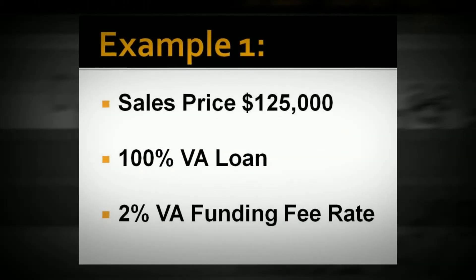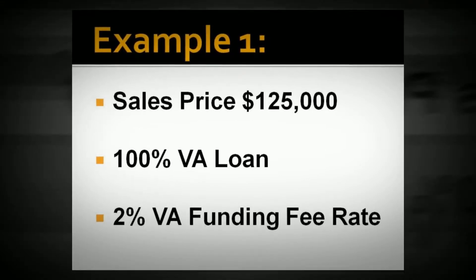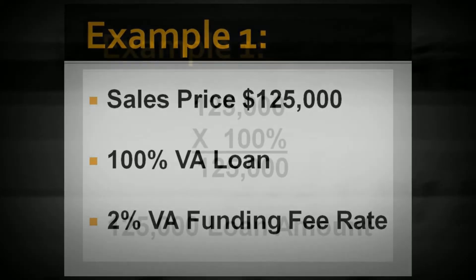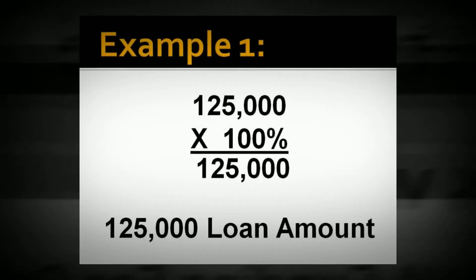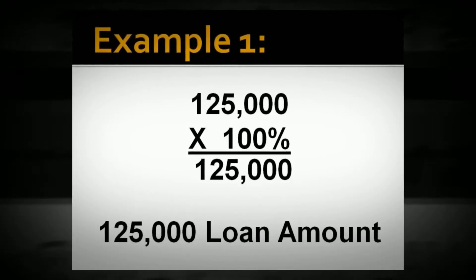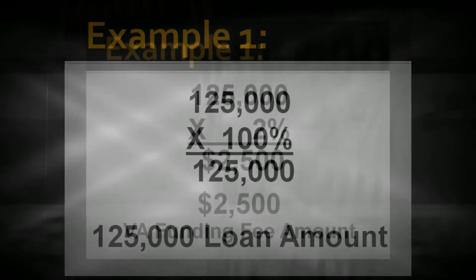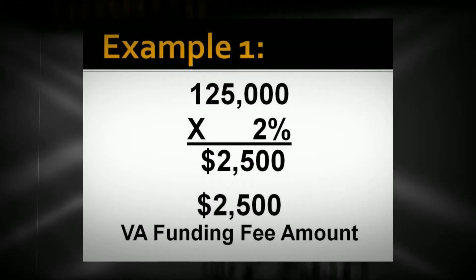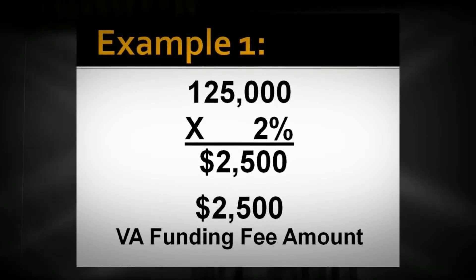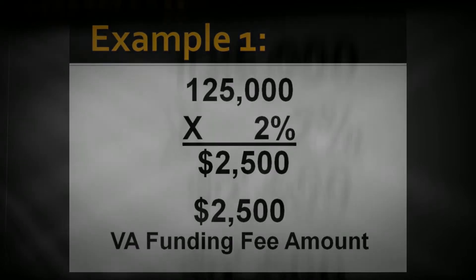Example one: you have a sales price of $125,000 with a 100% VA loan, and the VA funding fee rate is 2%. You take $125,000 times 100%, which gives you $125,000 as the loan amount. Then you take the $125,000 loan amount and multiply that times 2%, which gives you $2,500. This is the VA funding fee.